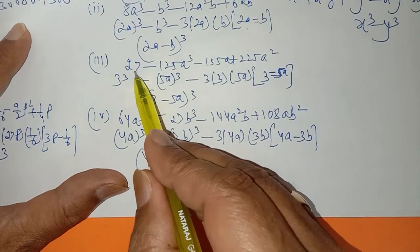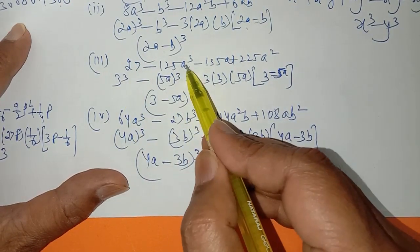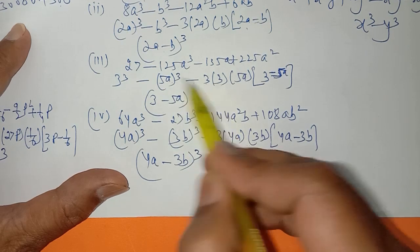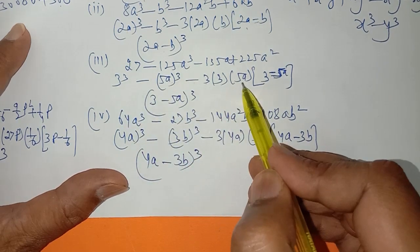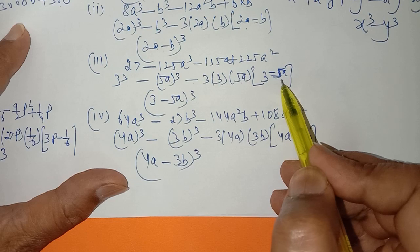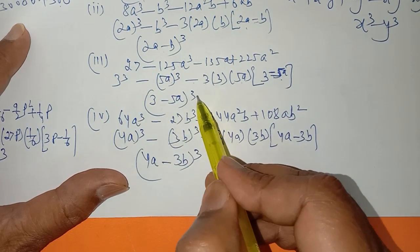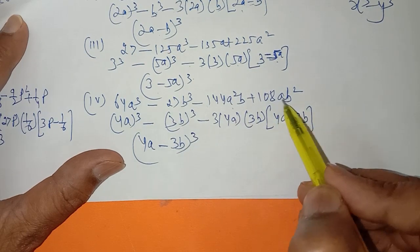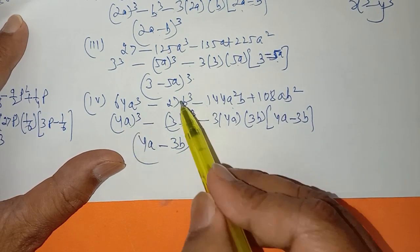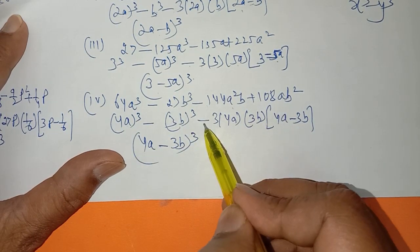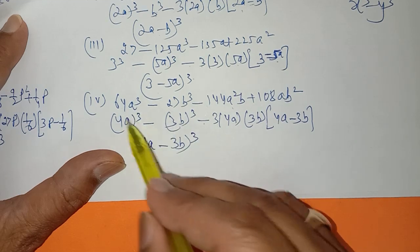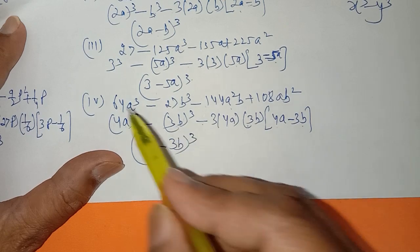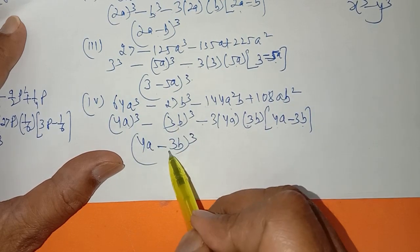Similarly, this is (3a) whole cube and this is (5a) whole cube. So using a³ minus b³ minus 3ab(a minus b), the whole cube becomes (3a minus 5a) whole cube. Again, looking at another part: this is (4a) whole cube and this is (3b) whole cube. Write minus 3 into 4a into 3b, with (a minus b) in the bracket. So it becomes (4a minus 3b) whole cube.